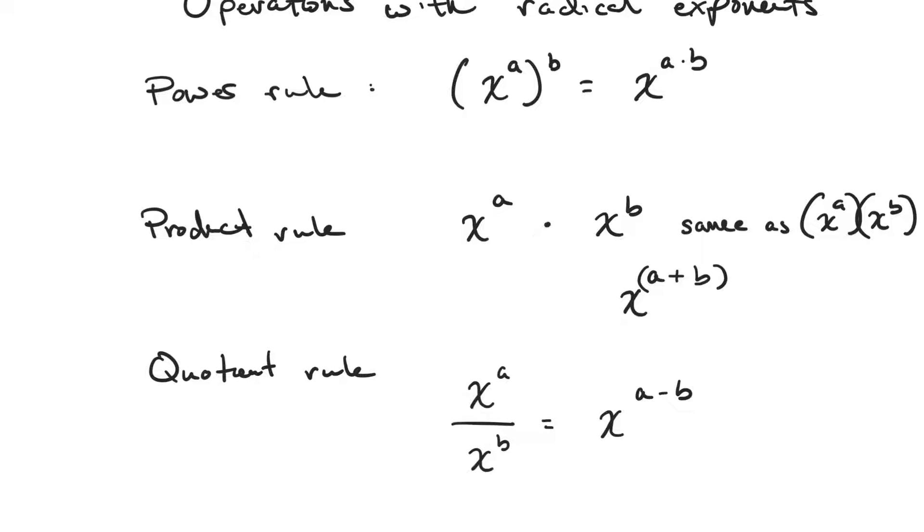So what we've got is the power rule states that if you have a group of anything with a base, you can take the exponent of the base and multiply it by the exponent that is on the group. So in other words, you get x to the a times b. Alright, straightforward.